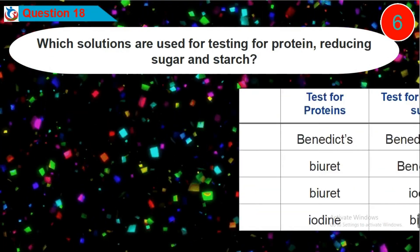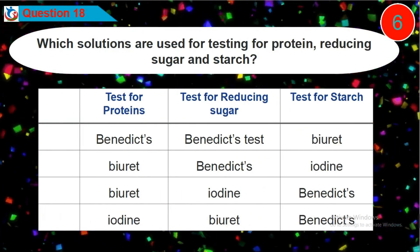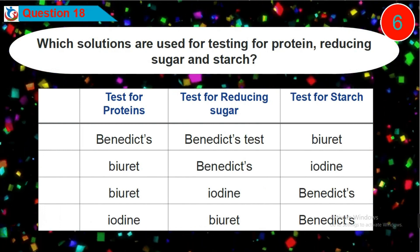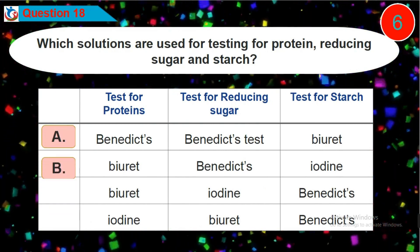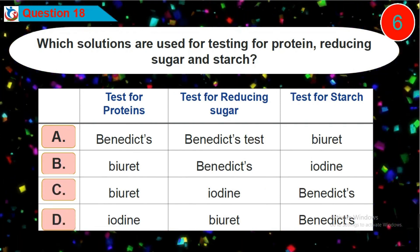Question 18. Which solutions are used for testing for protein, reducing sugar and starch? Is it option A, B, C or D?